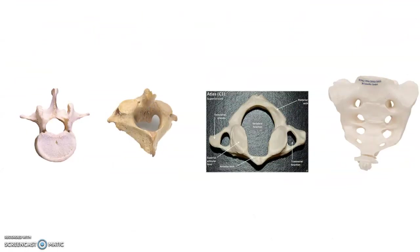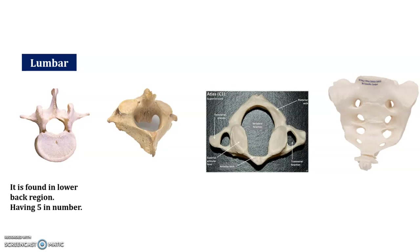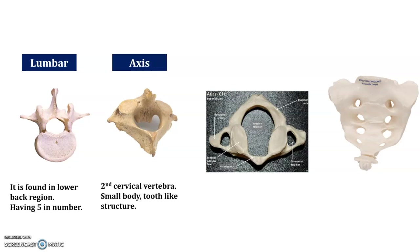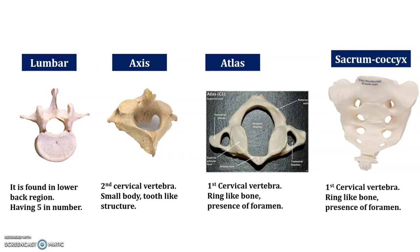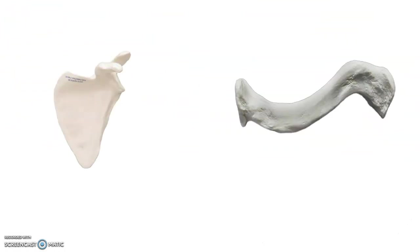Next are the bones of the vertebral column. The lumbar vertebrae are five in number and are present in the lower back region, forming the third section after cervical and thoracic. The second spot is the cervical vertebra — the axis — containing a tooth-like structure. The first cervical vertebra, the atlas, has a ring-like structure with a foramen. Last are the sacrum and coccyx.